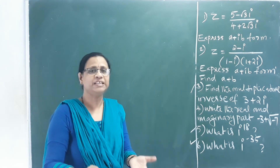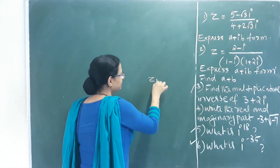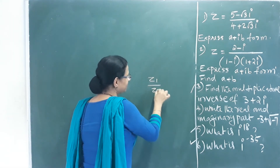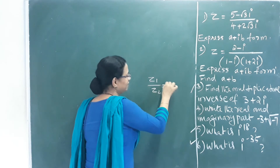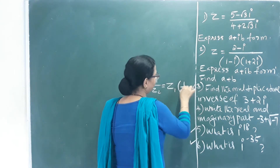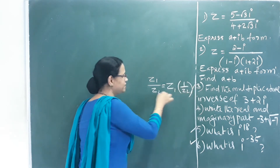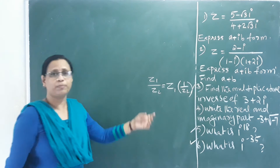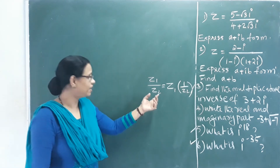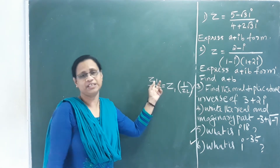Division of complex numbers is simple: Z₁ ÷ Z₂ = Z₁ × (1/Z₂). That is how we perform division of complex numbers.